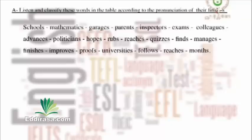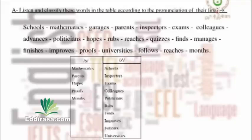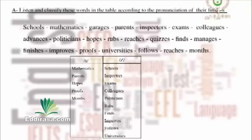Let's correct together. The first column — final S heard as /s/ — includes: mathematics, parents, hopes, proofs, and months. The second column — final S heard as /z/ — includes: schools, inspectors, exams, colleagues, politicians, raps, finds, improves, follows, and universities. Note: some pupils may say universities ends in /ɪz/, but the final E is part of the root word 'university,' so the final S is just heard as /z/ — as in 'babies' also.